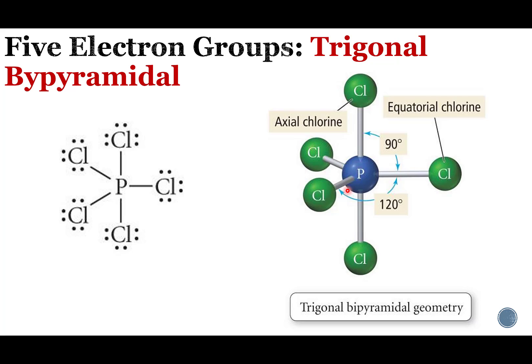The reason we distinguish axial and equatorial is because lone pairs only have one option. In the trigonal bipyramidal or five electron group arrangement, if we have lone pairs, they're going to go equatorial. The bond angle at the equator is a little bit larger at 120 degrees. Lone pairs take up more space, so they go on the equator where there is, in fact, more space.